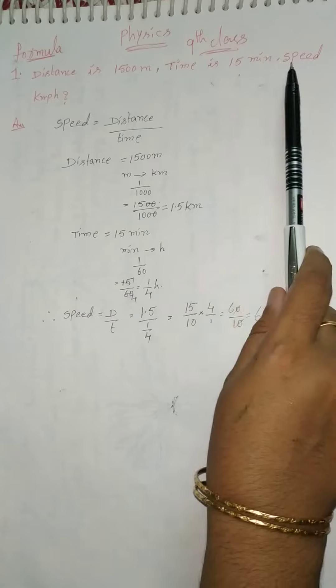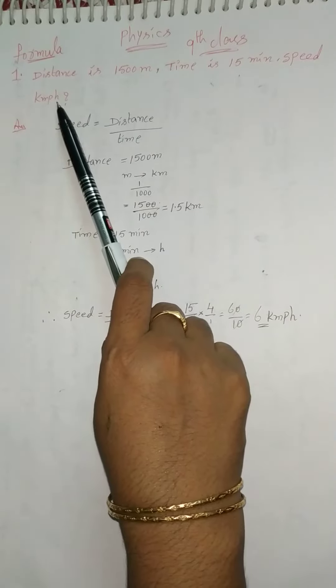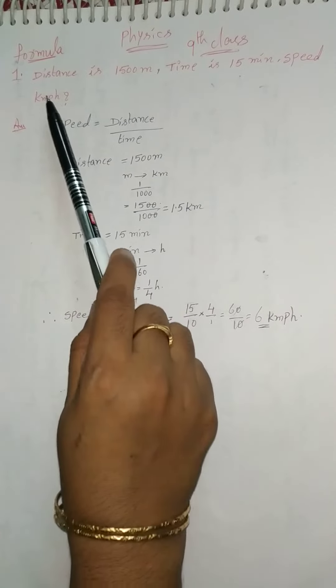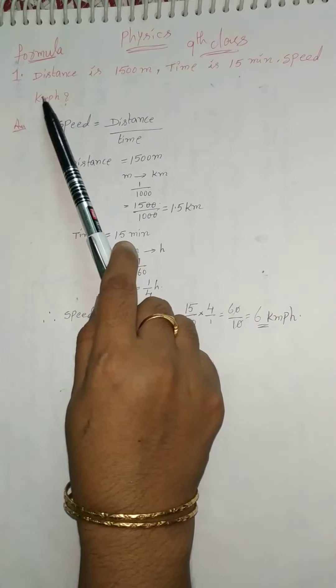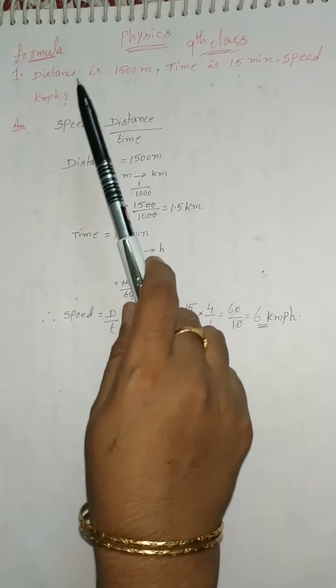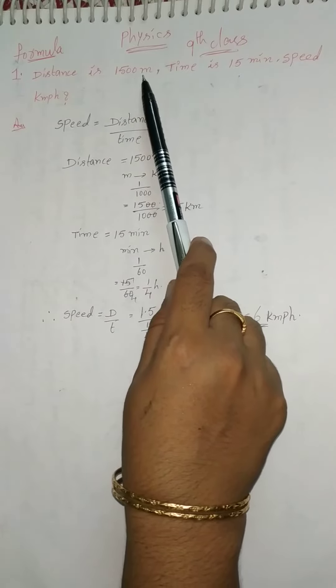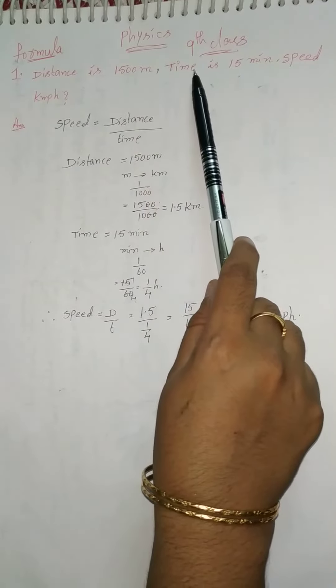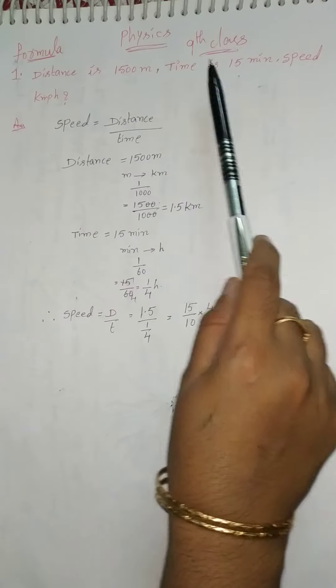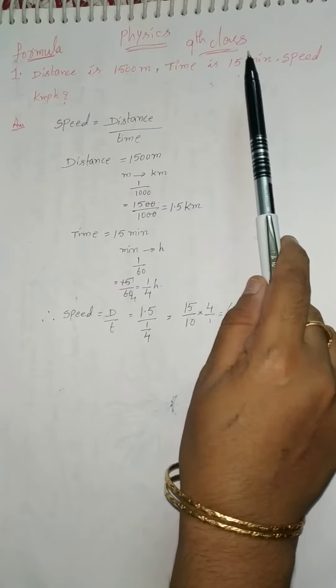In this problem, what did they ask? Find the speed in kilometer per hour. So kilometer means the distance also in kilometers and the time is also in hours. But they give distance in meters, so we change the meters into kilometers. And the time is in hours but they give in minutes, so we change the minutes into hours.